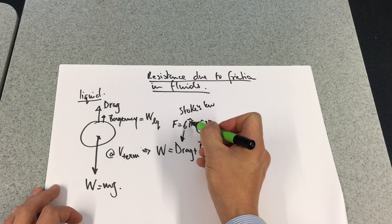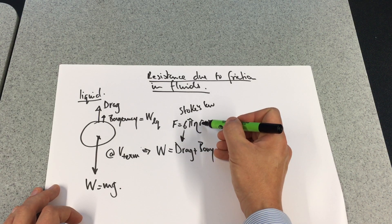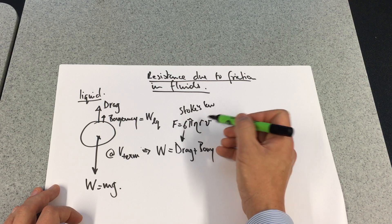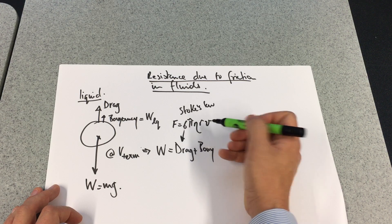This is obviously a constant, this is a constant, this is a constant, this is the radius of the ball that we're throwing through, and finally we have velocity, how fast it's moving.